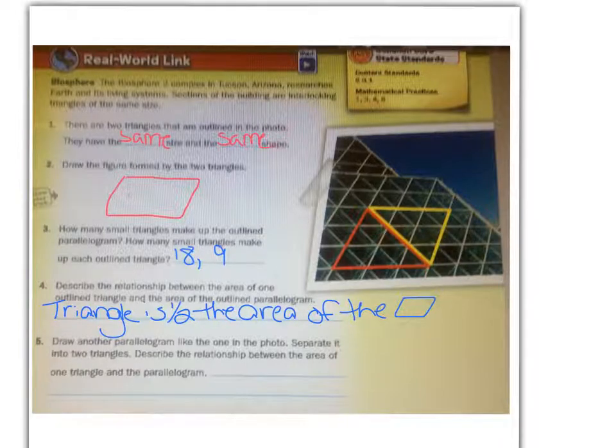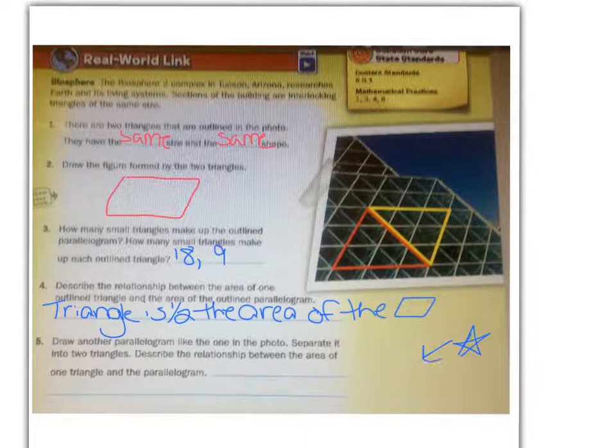Draw another parallelogram like the one in the photo separated into two triangles. Describe the relationship between the area of one triangle and the parallelogram. I'm going to let you draw your own shape right here. When you have finished, then go ahead and go to the next page.